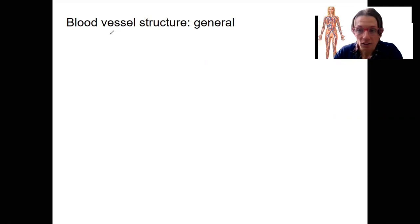So there are three layers or tunics to blood vessels, three layers. These are called tunics. Actually, we're going to start with the inner one.